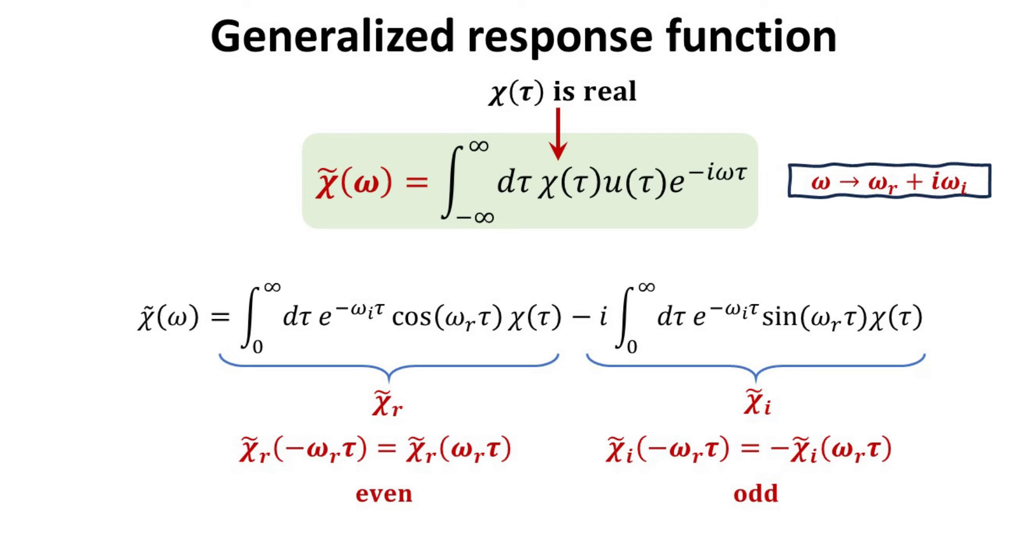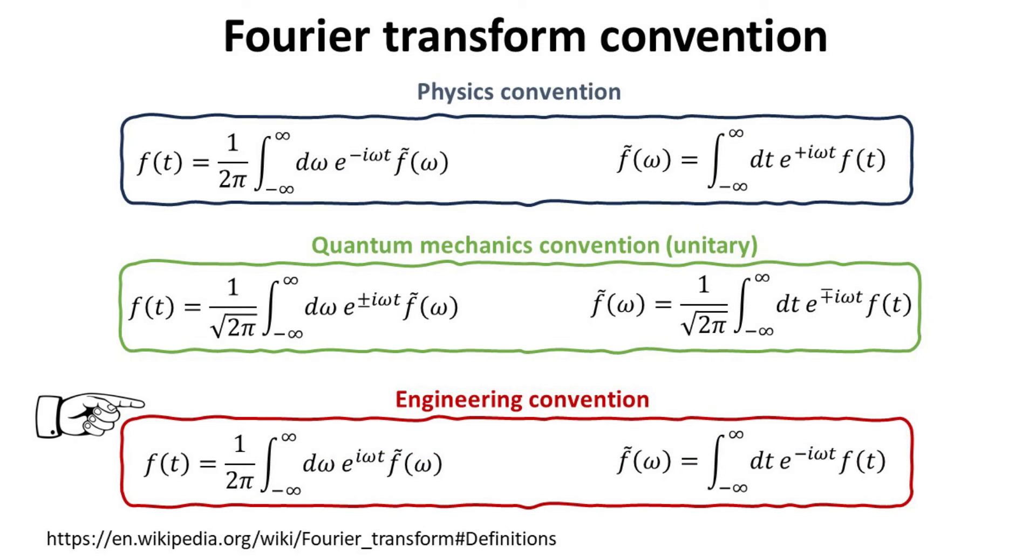We shall exploit this property later. We should stress that there are different Fourier transform conventions in the literature. We will be using the engineering convention, unless stated otherwise. This is also the convention implemented in the popular scientific programming tool MATLAB. You can find tables of common Fourier transform pairs for these conventions at Wikipedia.